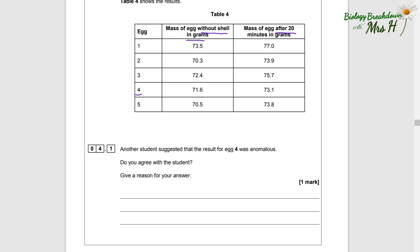4.1: Another student suggested the result for egg 4 was anomalous. Do you agree with the student? Give a reason for your answer. You need to look at the table and work out the differences for each egg to see if you can make a comment here. So if we do the difference between egg 1 before and after, that's minus 3.5. For egg 2 it's a decrease of 3.6 grams. For egg 3 it's a decrease of 3.3 grams. For egg 4 it's a decrease of 1.5 gram. For egg 5 is a decrease of 3.3 grams.